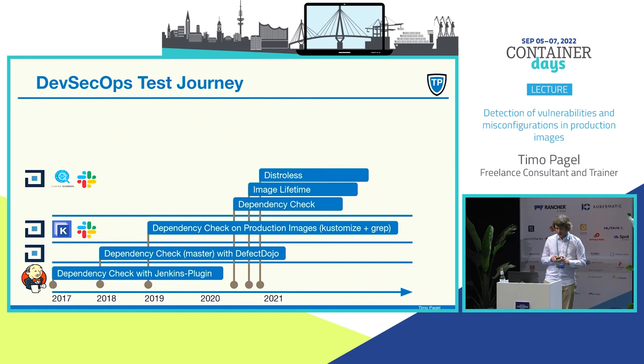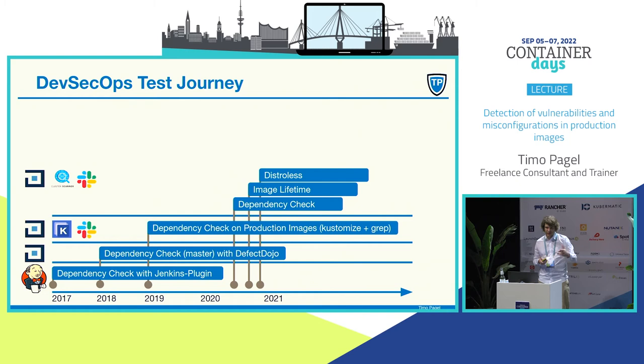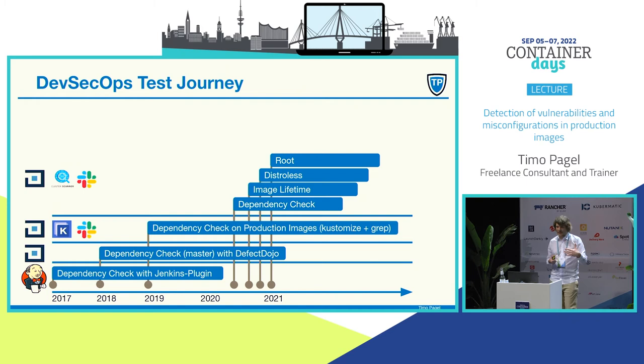So that was the image check. I also have a distroless check. You might aim for an architecture pattern — distroless — where you only copy the application into your image and don't have a shell around it. I check for it: in case there is a bash available, you're not following this best practice pattern.